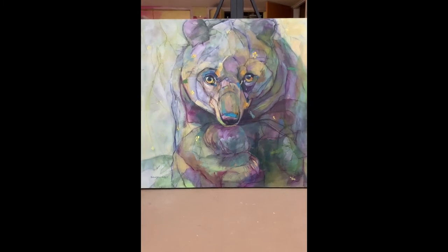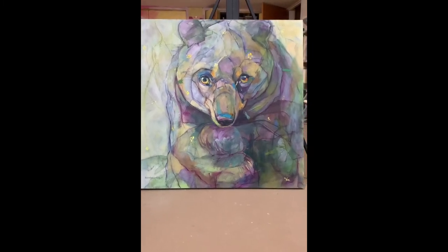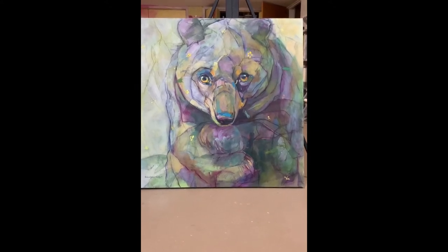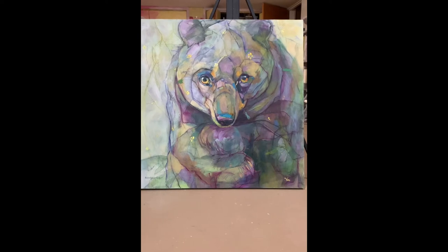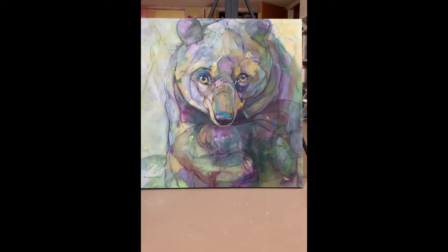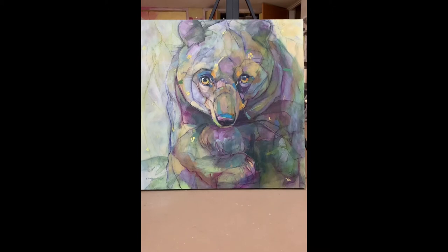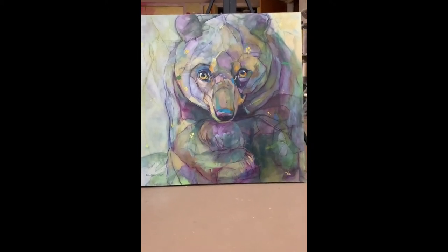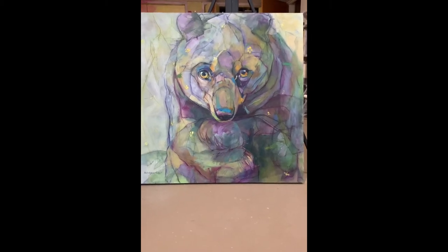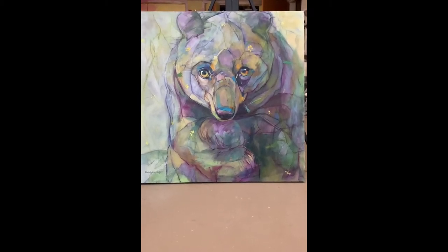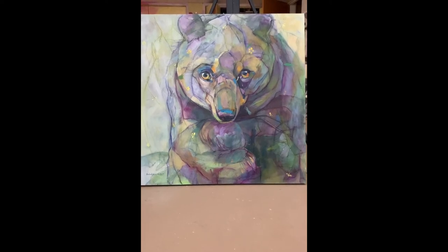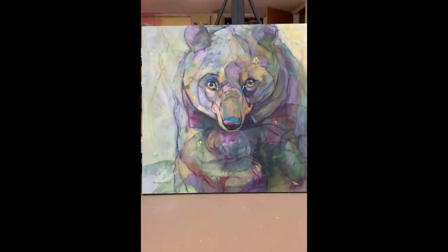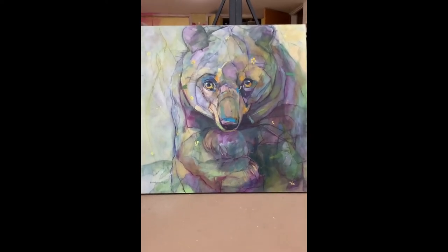So this painting itself is predominantly complementary colors. Complementary colors are two colors that sit opposite each other on the color wheel, directly across from each other on a traditional ROYGBIV color wheel. So my complementary colors here would be the purple and the yellow. And I used those two colors side by side, as well as mixing them or blending them together.